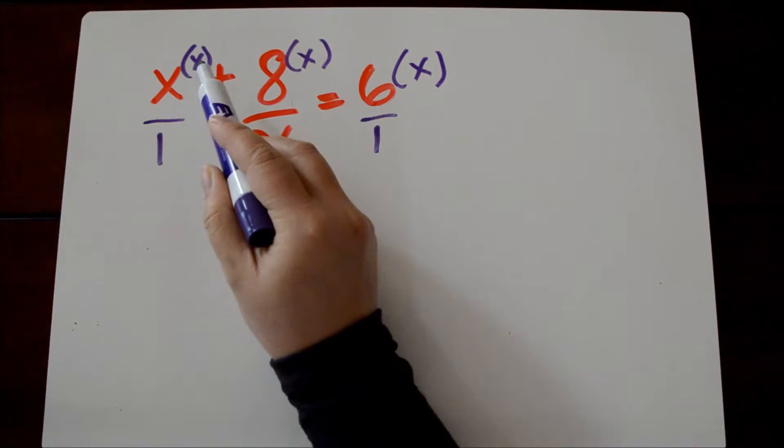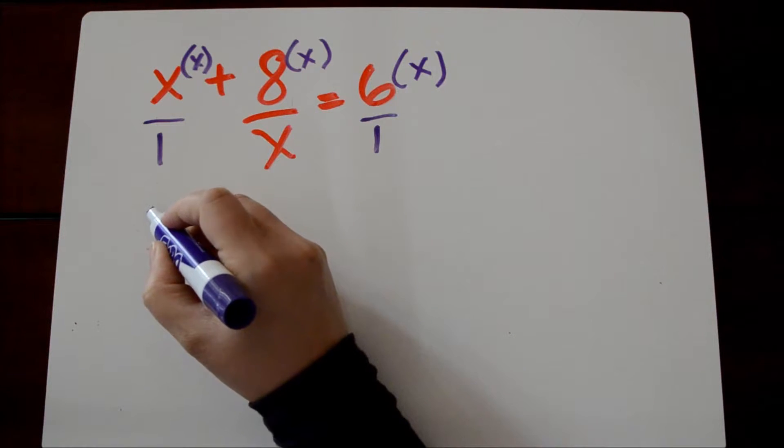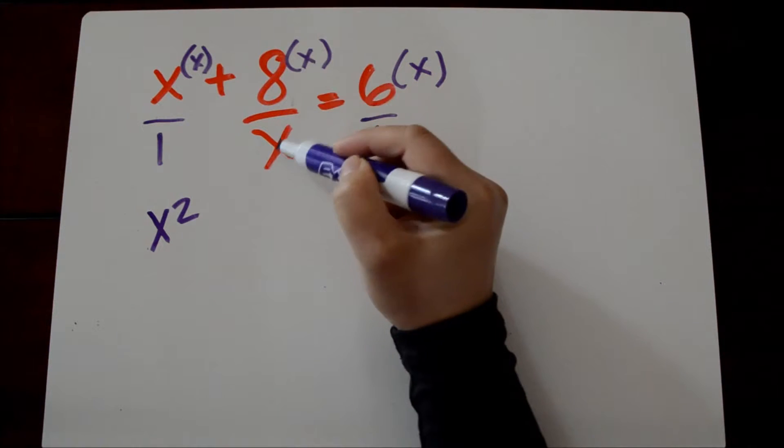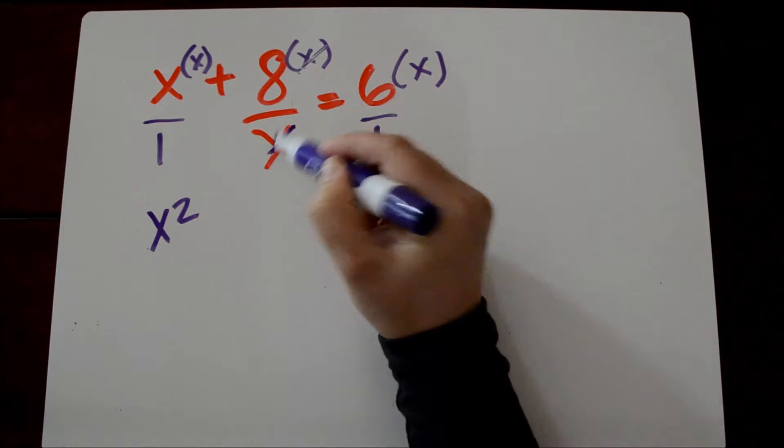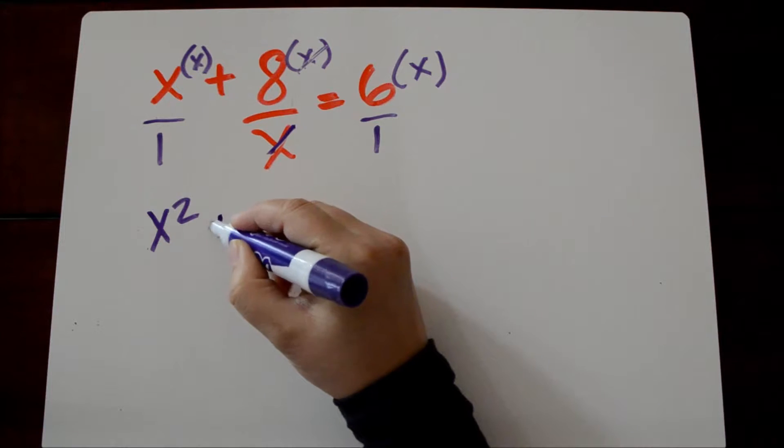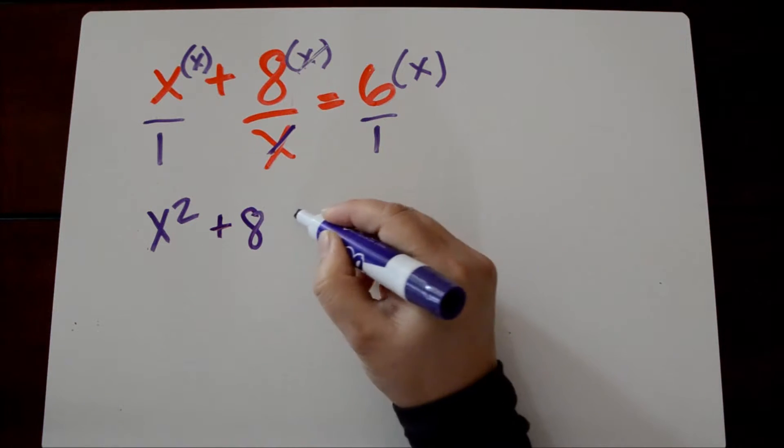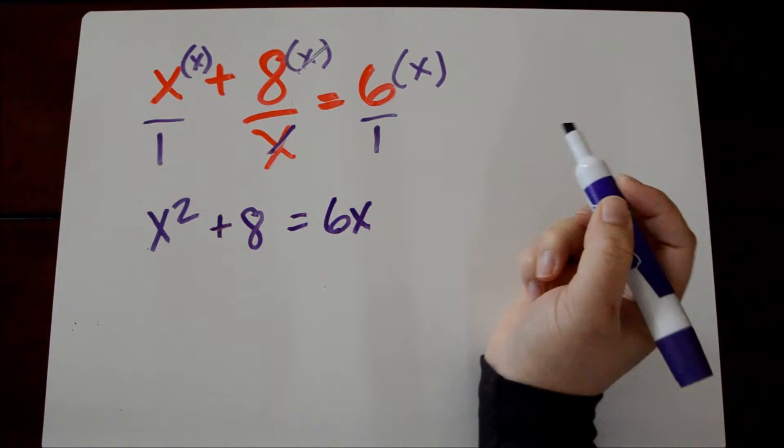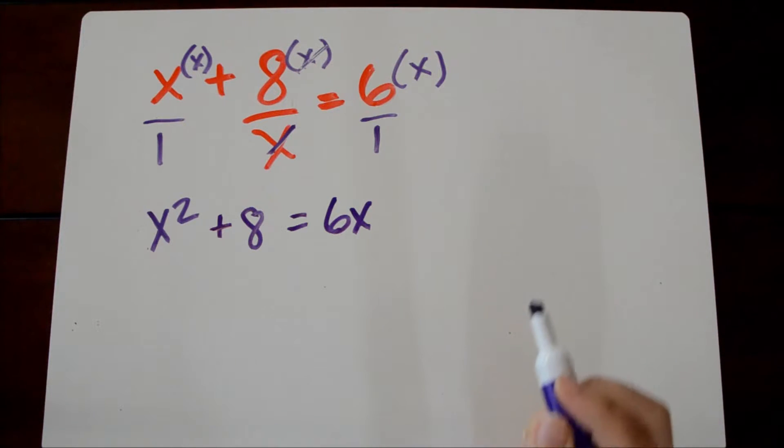And here x times x is x squared, x squared divided by 1 is still x squared. Over here 8x divided by x, the x cancels out because anything divided by itself cancels out. So we're left with 8. And then over here we have 6 times x divided by 1 which is 6x. So now our equation actually becomes quadratic.